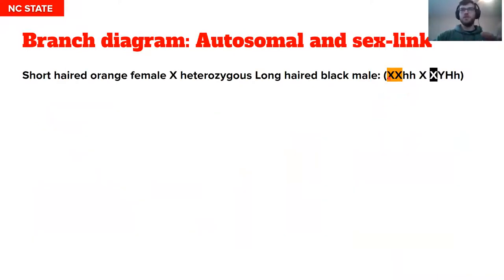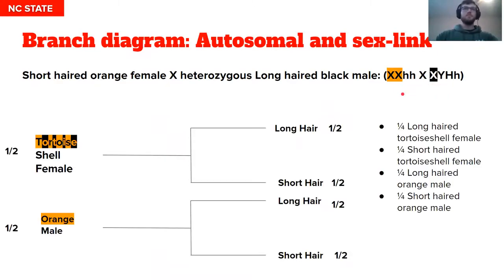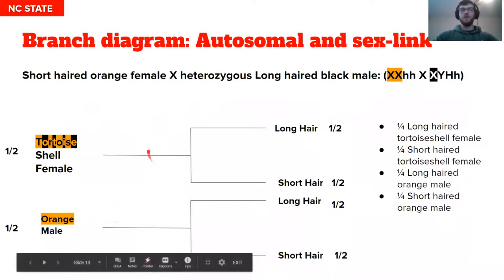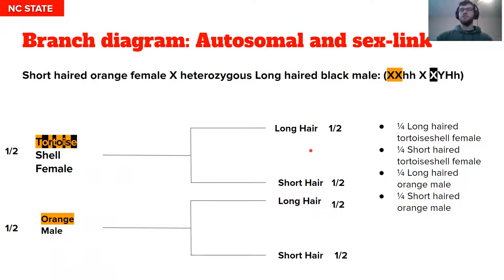So if we do a cross between an orange female and a black male, and then we throw in another trait — hair length, where long hair is dominant over short hair — we get half tortoiseshell cats and half orange males. That's all you can get because the father gives Y to all the males and the mother gives orange to the males, and females get one of each. So within each of those colorations you get long hair or short hair, which ends up with four possible phenotypes total: long-haired and short-haired tortoiseshell females, and long-haired and short-haired orange males.